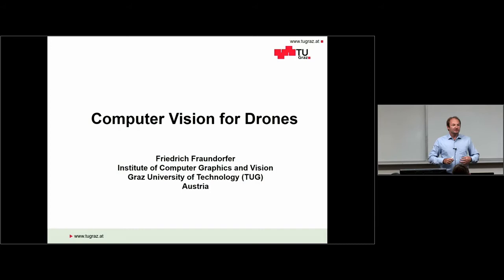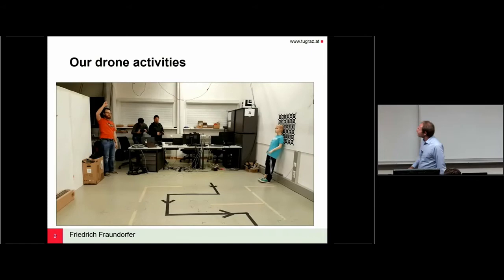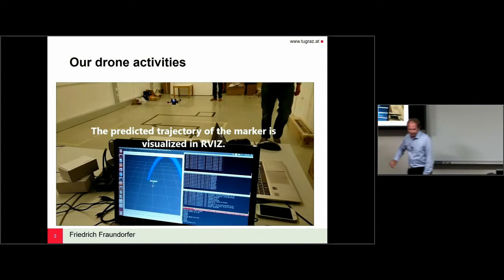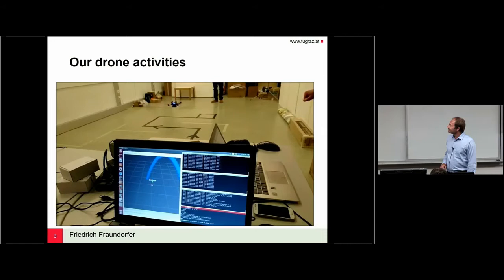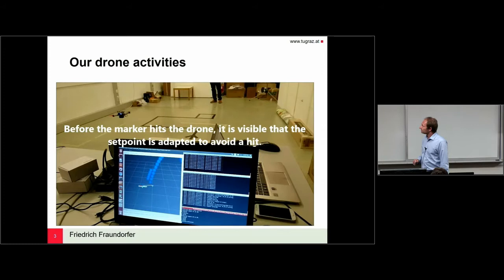So this is basically the introduction. What do we do with drones at our lab right now? I would like to start with a short video. One of our student projects, running in our drone lab at the university, is a drone that avoids an object thrown at it. You see a small bowl, and the drone is avoiding it. In the visualization in the ROS interface: a small bowl is held in the hand, thrown at the drone, its trajectory is detected and computed, and if an impact is imminent, the drone moves out of the way. This is one of our activities, just as motivation.